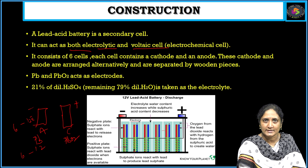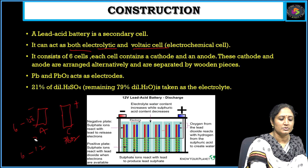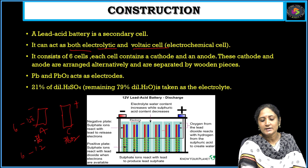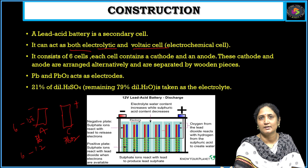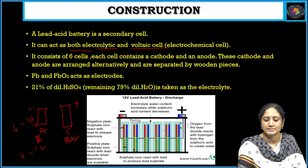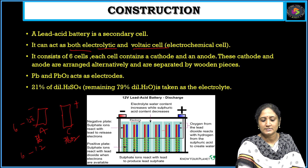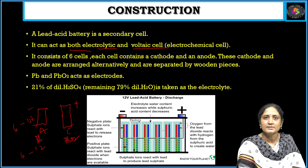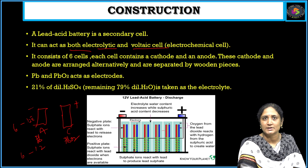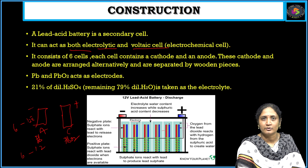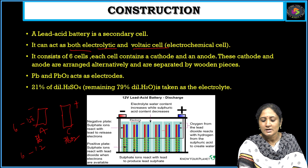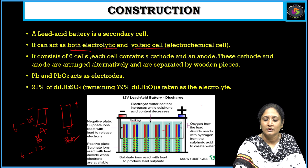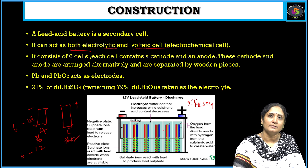The anode is represented by Pb and the cathode is represented by PbO₂. These anode and cathode are separated by wooden sheets so that chemical reactions take place and electrical energy is released. The electrolyte used here is sulfuric acid, H₂SO₄. We take 21% of H₂SO₄ as the electrolyte; the remaining percentage is diluted with water.